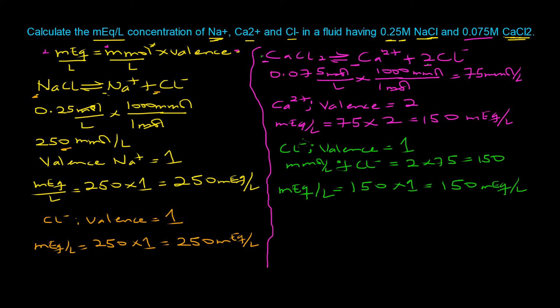It's extremely important to do one more step: since we are getting chloride from both NaCl and CaCl₂, we need to add the contributions. Chloride from NaCl gives 250 mEq/L and chloride from CaCl₂ gives 150 mEq/L, so total chloride = 250 + 150 = 400 milliequivalents per liter.